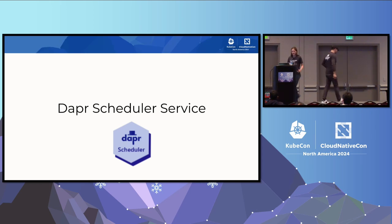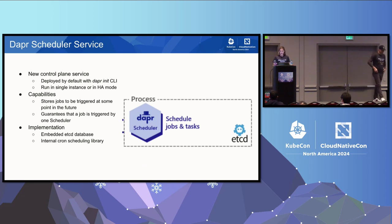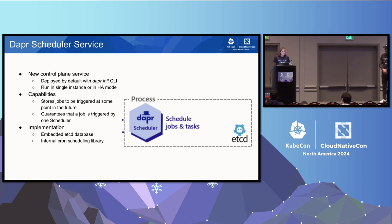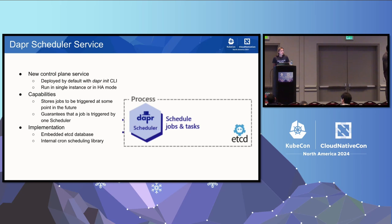Let's get into the Scheduler. The scheduler is a brand new control plane service deployed by default with a DAPR init. It runs in Kubernetes mode and standalone mode as a single instance or in HA mode — one or three instances respectively. The capabilities are to store jobs to be triggered at some point in the future, while guaranteeing that only one scheduler is going to send back that job, so you don't have to worry about multiple schedulers sending back the same job.